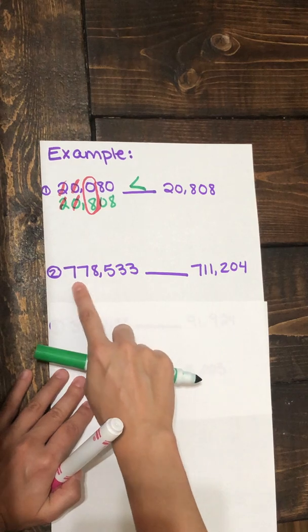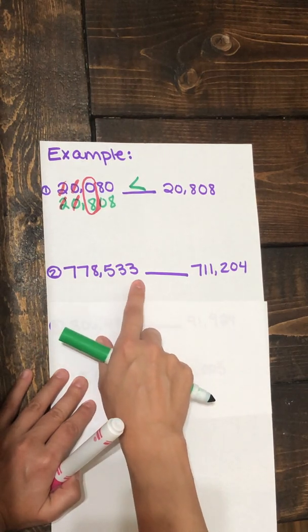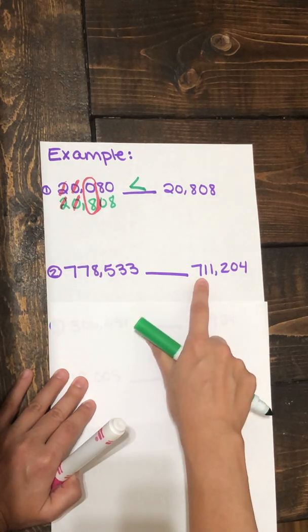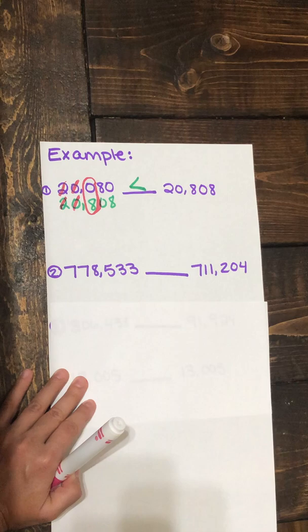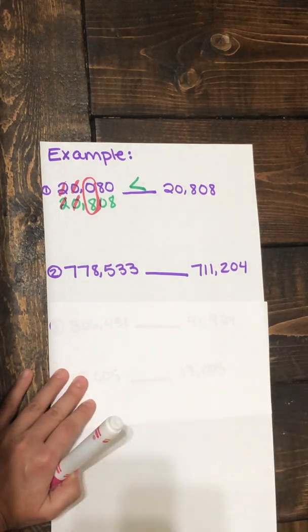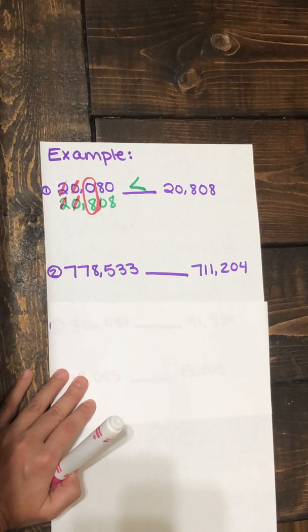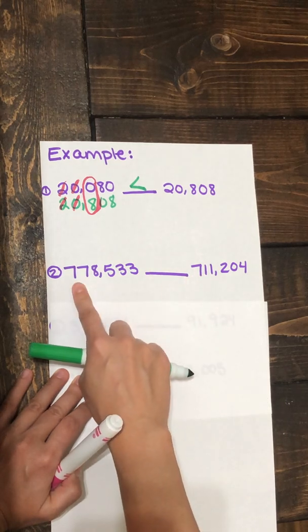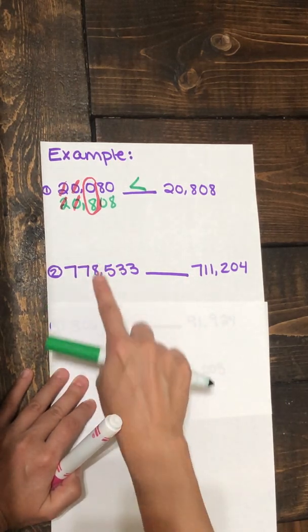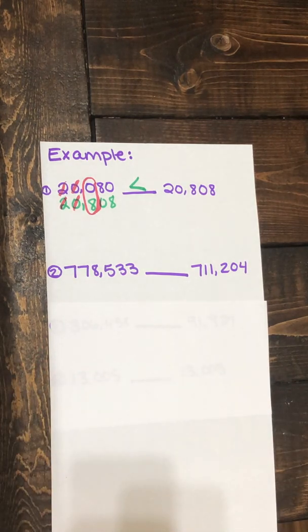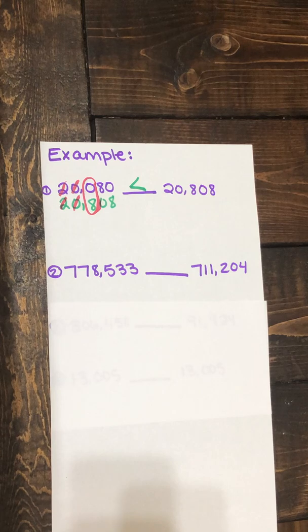We have 778,533 and we're going to compare that to 711,204. Again, we can compare, we need to compare each place starting on the left. If you need to, you can go ahead and write your number underneath the other one so you can see easily the places comparing to each other. I'm going to try this one without lining it up vertically.